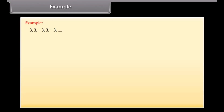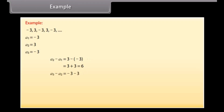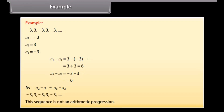Let us now solve an example. Observe this sequence — we will find out whether these numbers form an AP or not. Here A1 is minus 3, A2 is 3, A3 is minus 3, and so on. A2 minus A1 equals 3 minus (minus 3), which equals 6. But A3 minus A2 equals minus 3 minus 3, which equals minus 6. Since A2 minus A1 is not equal to A3 minus A2, the given sequence is not an arithmetic progression.